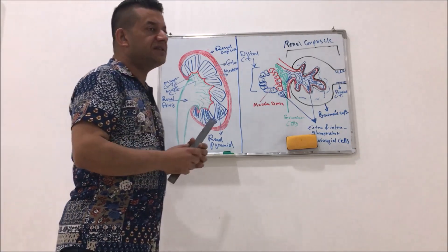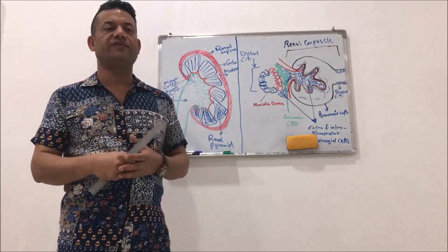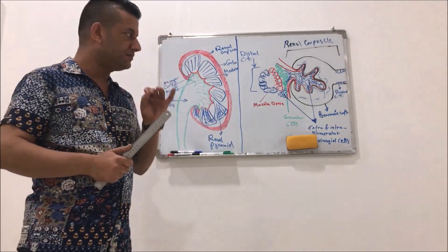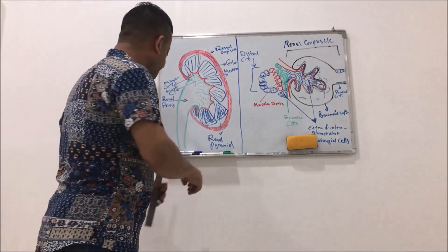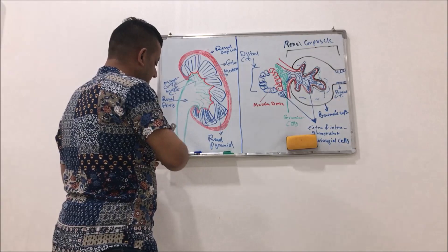Now, what is the functional unit? What is the functional unit of the kidney? The functional unit of the kidney is the nephron.